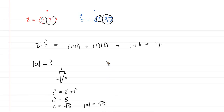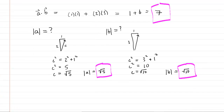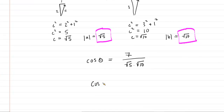For vector B, we rose 3 units and ran 1 unit. So C squared equals 3 squared plus 1 squared equals 10, meaning the magnitude of vector B is the square root of 10. Now we have everything: the dot product is 7, the magnitude of A is root 5, and the magnitude of B is root 10. Using the corollary, cosine of theta equals 7 over the square root of 50.